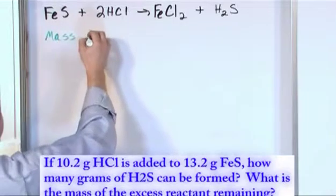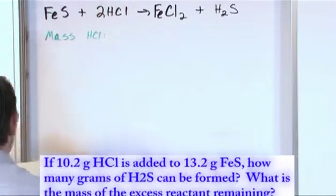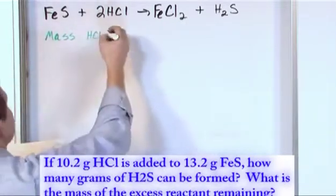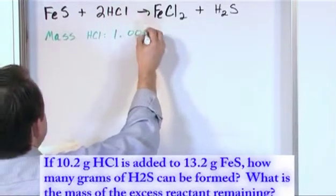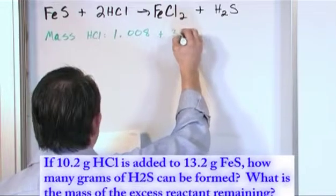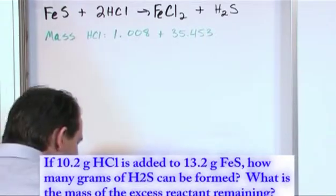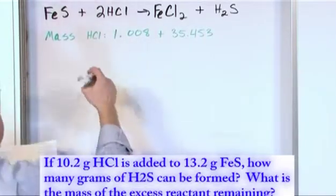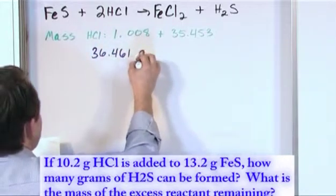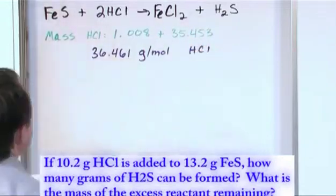So the mass of hydrogen, well, you could call it hydrogen chloride, but it's really hydrochloric acid, is the mass of hydrogen is 1.008. There's only one of them. The mass of the chlorine is 35.453. These are both grams per mole. So when you add these guys together, what you're going to get is 36.461 grams per mole for hydrochloric acid. So that's important.